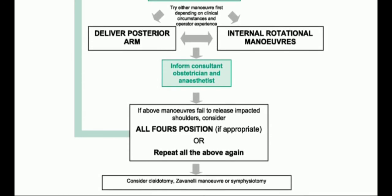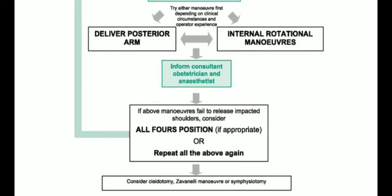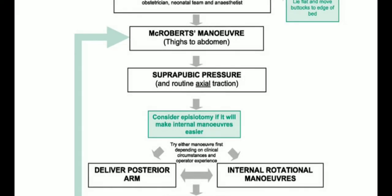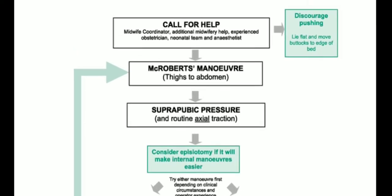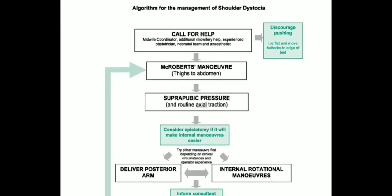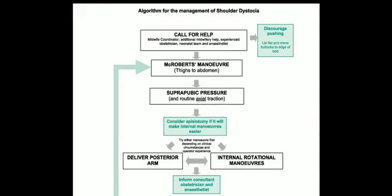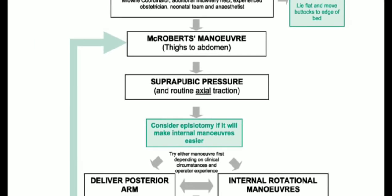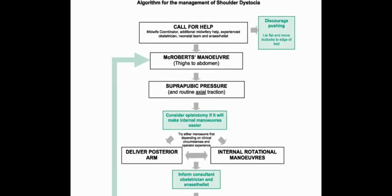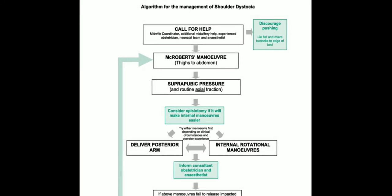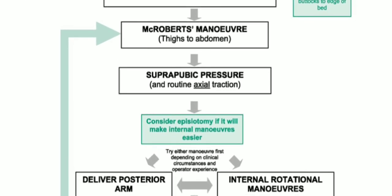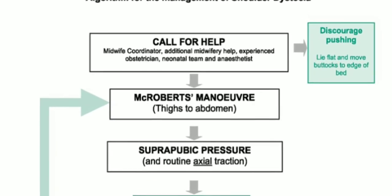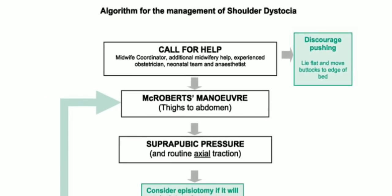If all maneuvers in the all-fours position also fail, then proceed to destructive maneuvers such as cleidotomy, Zavanelli maneuver, or symphysiotomy. That is a brief description of the algorithm from the RCOG guideline on shoulder dystocia. The companion video on the shoulder dystocia OSCE station explains how to manage the exam scenario and what types of questions are asked.